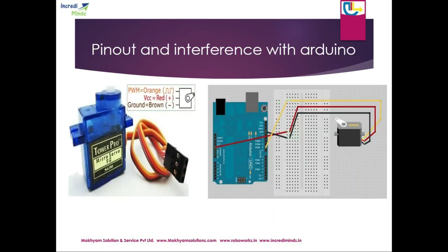Now we will go ahead with the pinout and interface with Arduino. These motors have only three pins. One is PWM — that is the orange pin — the other is red which is VCC (5 volts), and the other is ground (0 volts). The black pin is connected to ground, the red pin (VCC) is connected to 5 volts, and the orange signal pin is connected to pin number 9.